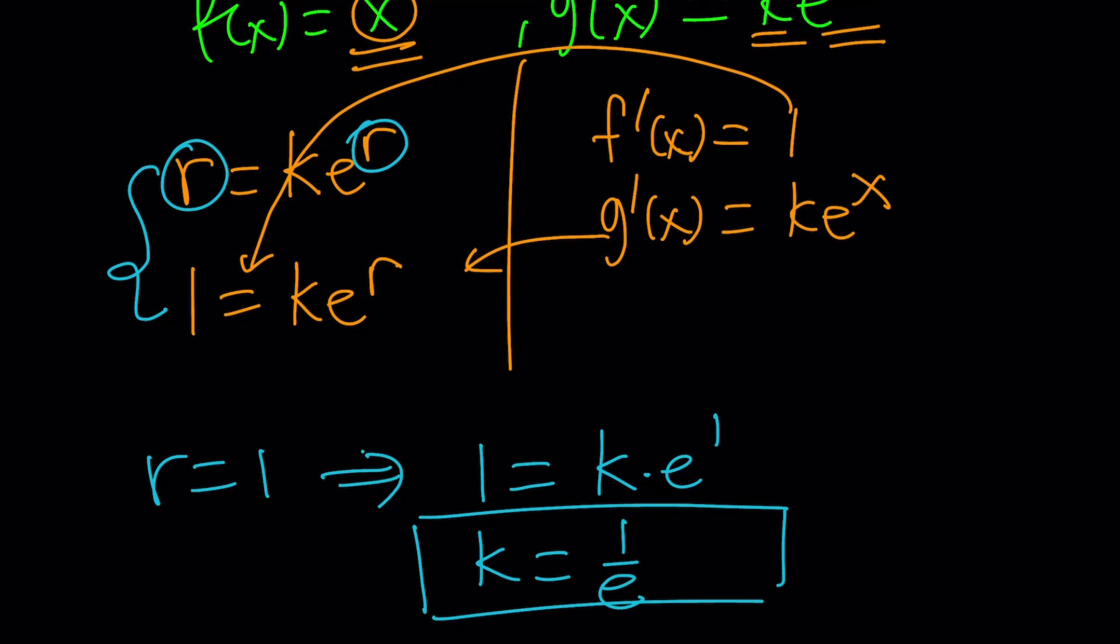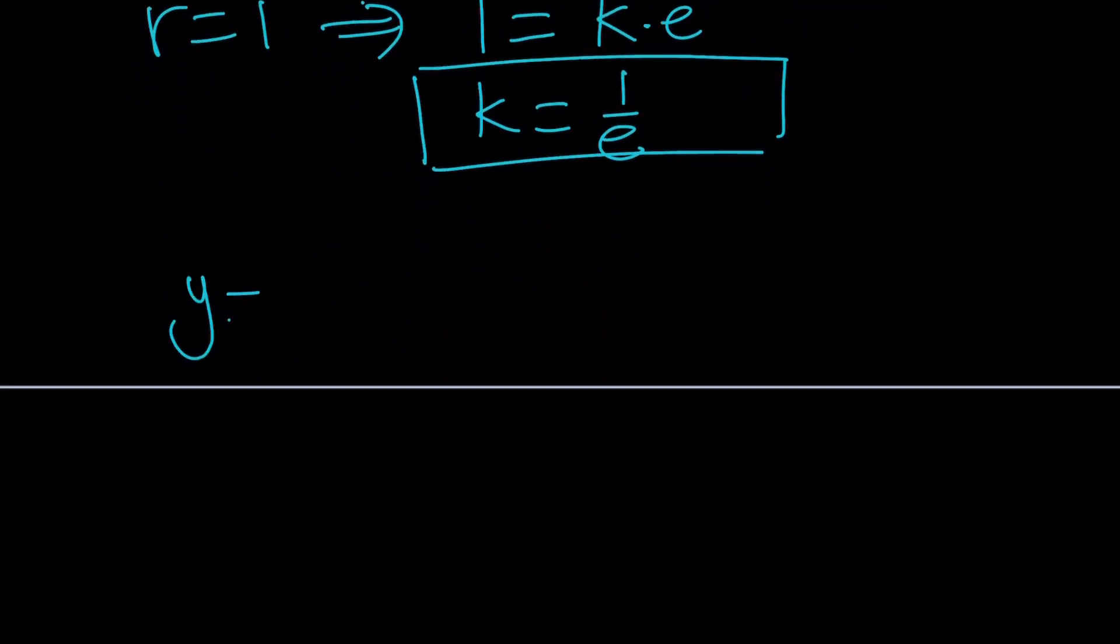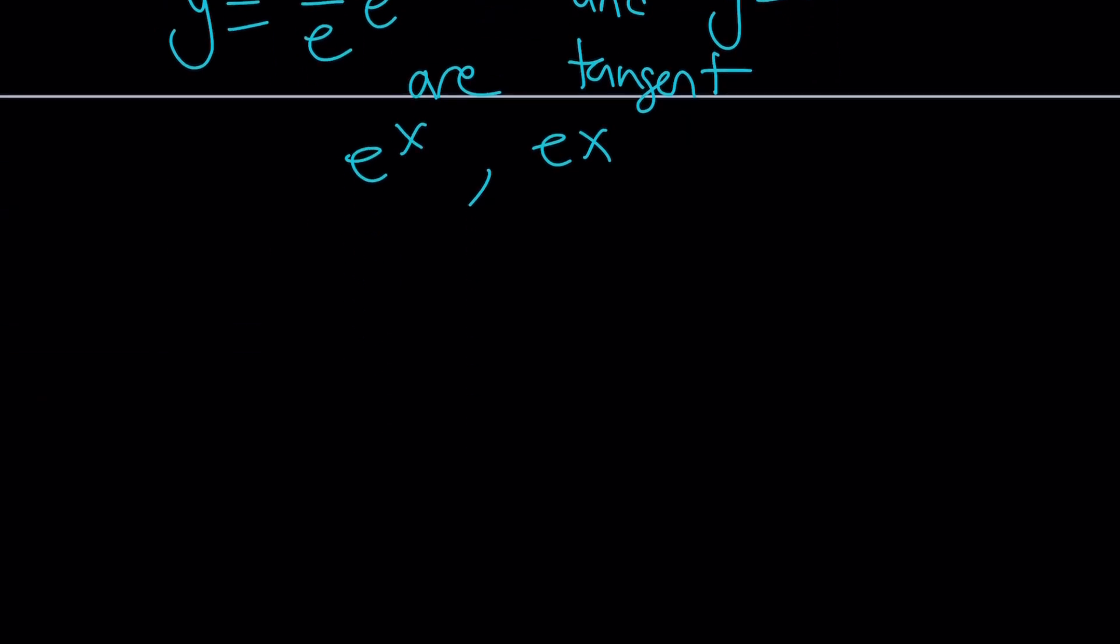So in other words, y equals 1 over e times e to the x, and y equals x are tangent. Are you serious? Obviously, you could also write this a little differently. You could also write it as e to the x and e x are tangent. Let's take a look at a graph real quick, and then we'll finish up.